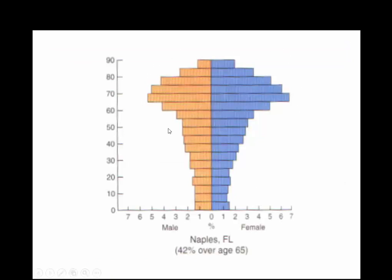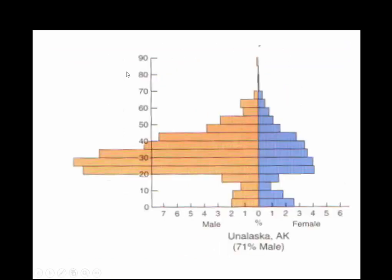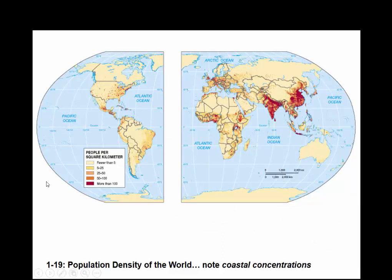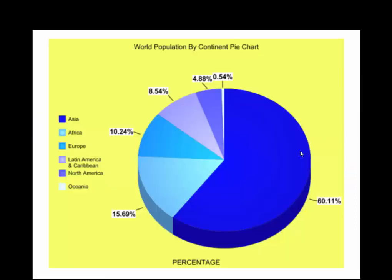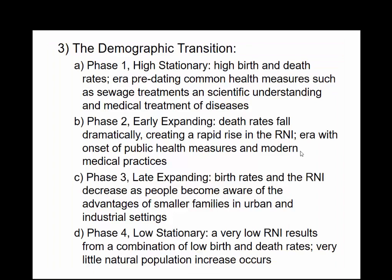You can see Naples, Florida, where there's a high elderly population. In Alaska, there's a lot of fishing so there's a higher male population — different dynamics. We can look at population density to see where population is concentrated. The world's most populous countries are China and India at one and two, the United States at three, and Indonesia at four. East and South Asia is where most of the world's population is.